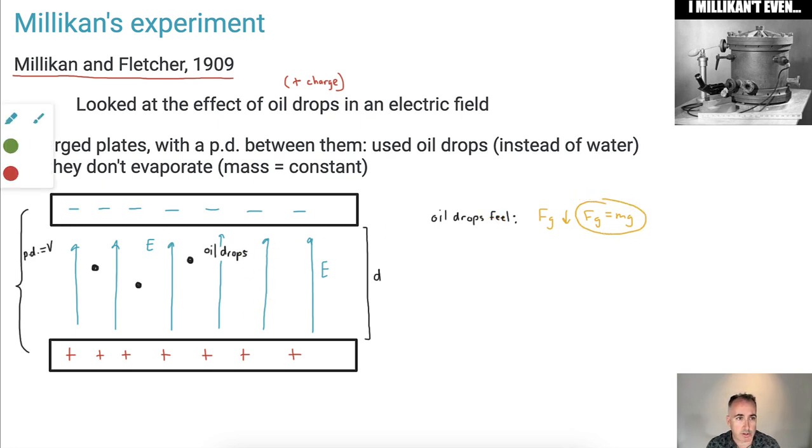But they're also going to feel an electric force, and that's going to be an upwards force. Now why is that? Well, because we have Fe equals EQ. That comes from the equation in our data booklet: E equals F over Q. So you can solve for F. So now we have these two forces: a downwards MG, a gravitational force, and an upwards electric force, E times Q.